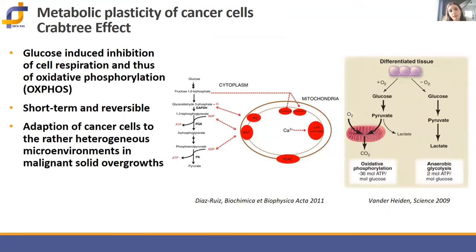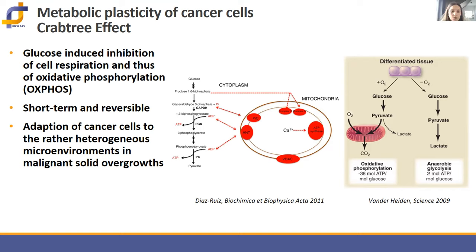However, like most normal cells in the body, some cancer cells — such as hepatoma, breast cancer, and glioma — were found to possess functionally efficient mitochondria, where the majority of ATP is derived from oxidative phosphorylation.